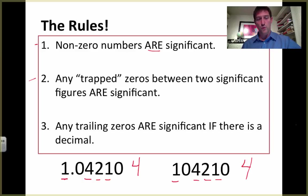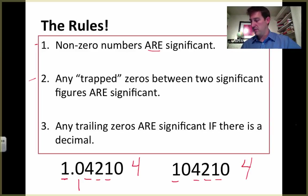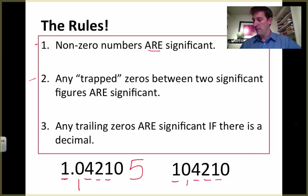Rule number two: any trapped zeros between two significant figures are significant. There's a trapped zero here. This one is not a trapped zero because there's nothing on the other side of it, and this one is a trapped zero. So this number now becomes five significant figures, and this number over here becomes five significant figures as well.